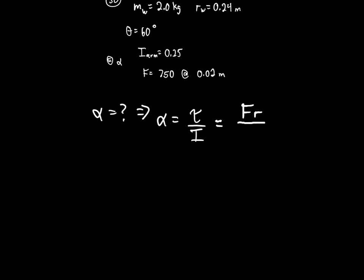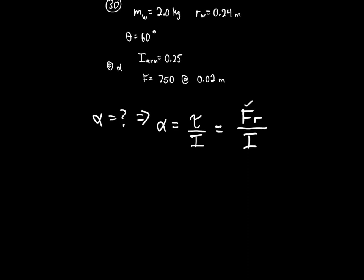Force is 750 newtons applied at 0.02 meters, so I have the torque. Now I need the moment of inertia. This is the trickiest part: the total moment of inertia has two parts — the moment of inertia of the arm, and the moment of inertia of the weight being held.